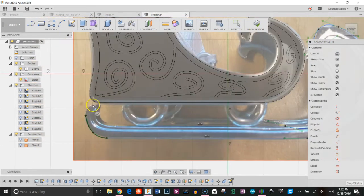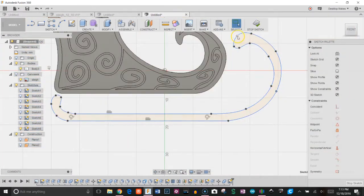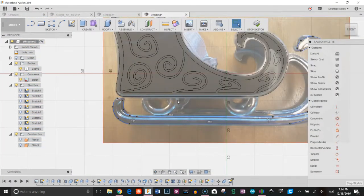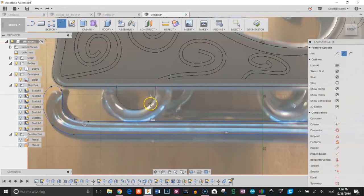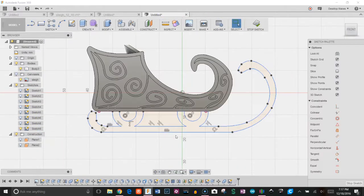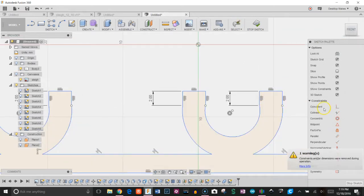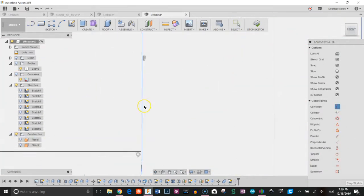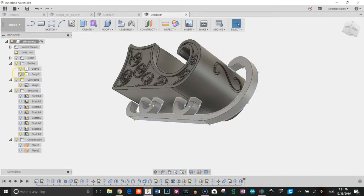Next I worked on the skis, and again, similar approach—I used the spline tool to trace it. Where it's gonna attach into the sleigh, I'm gonna extend those up a little bit, and then I'm gonna apply a Boolean operation using the combined feature to cut those out of the sleigh.